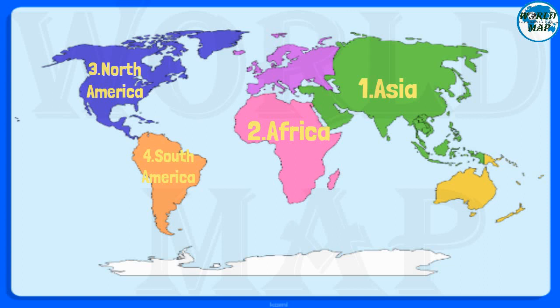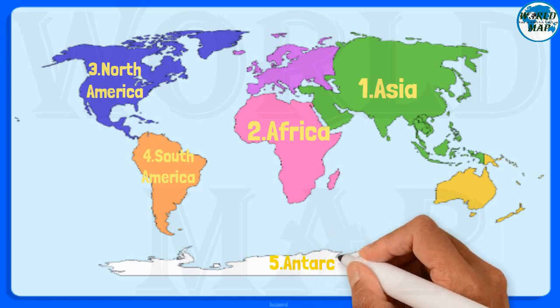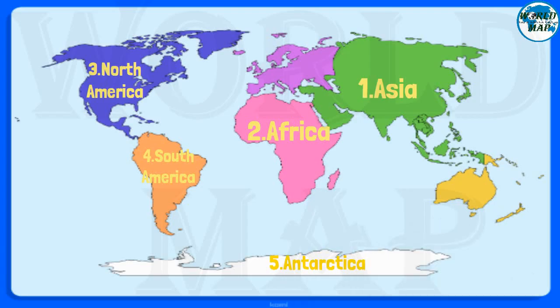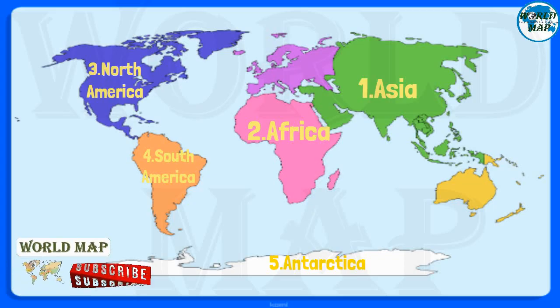Number 5: Antarctica. It is the fifth largest continent on Earth with no countries and no permanent human habitation. However, the continent has permanent human settlements where scientists and support staff live on a rotational basis.